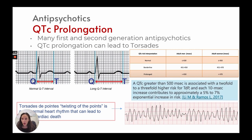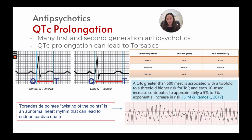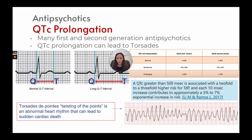QTc prolongation refers to the Q to T interval on the cardiac rhythm being stretched out. When prolonged, it can turn into torsades de pointes — twisting of the points — an abnormal heart rhythm that can lead to sudden cardiac death. A QTc greater than 500 is associated with a two- to threefold higher risk of torsades de pointes. Each 10-millisecond increase contributes to approximately a 5 to 7 percent exponential increase in risk.